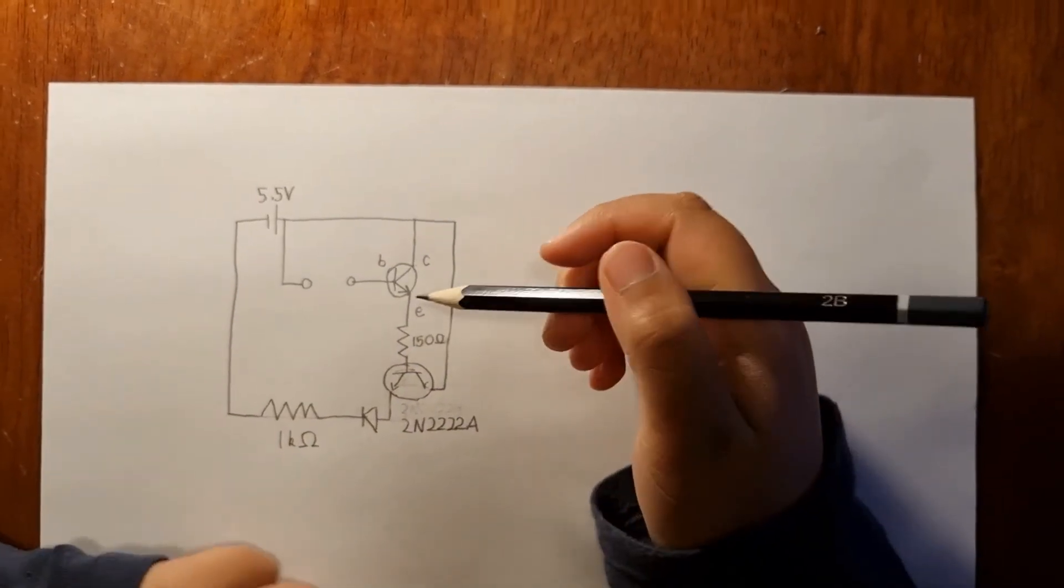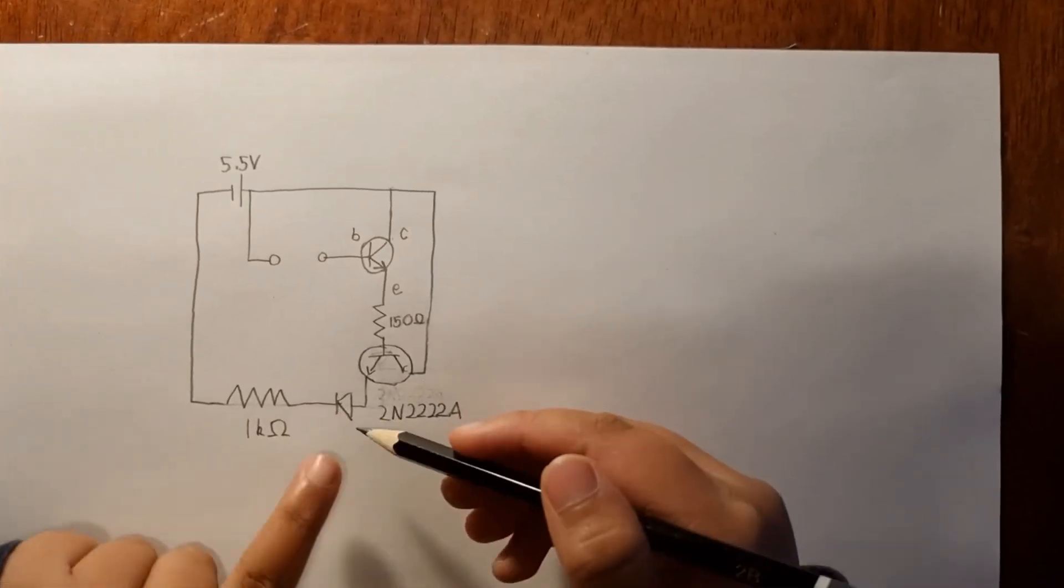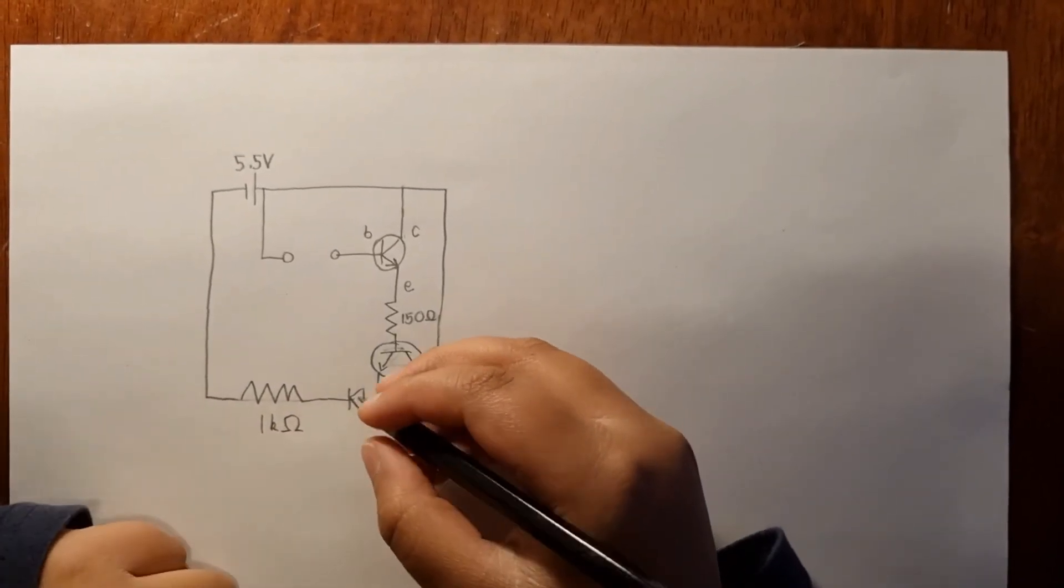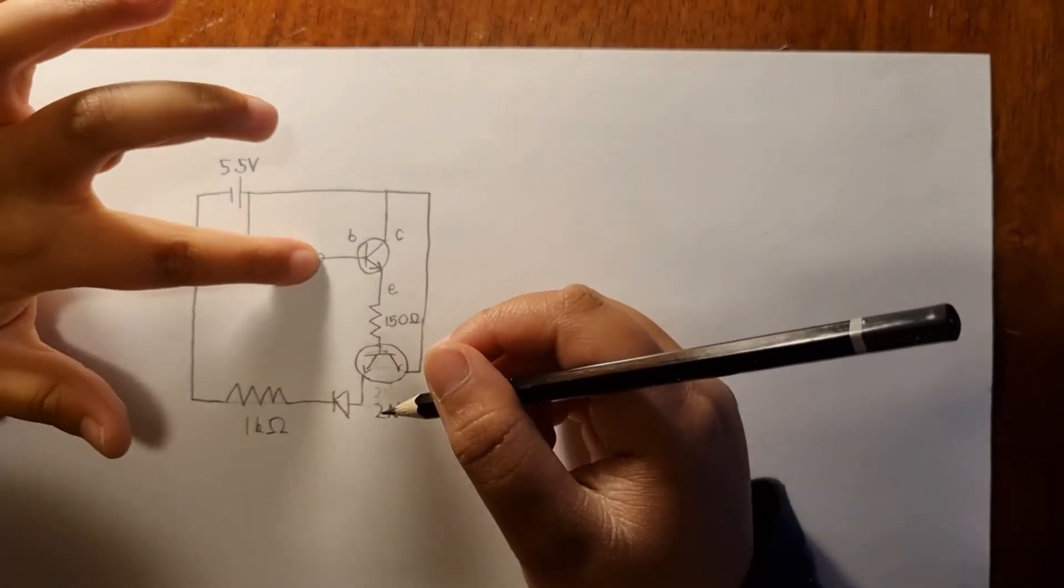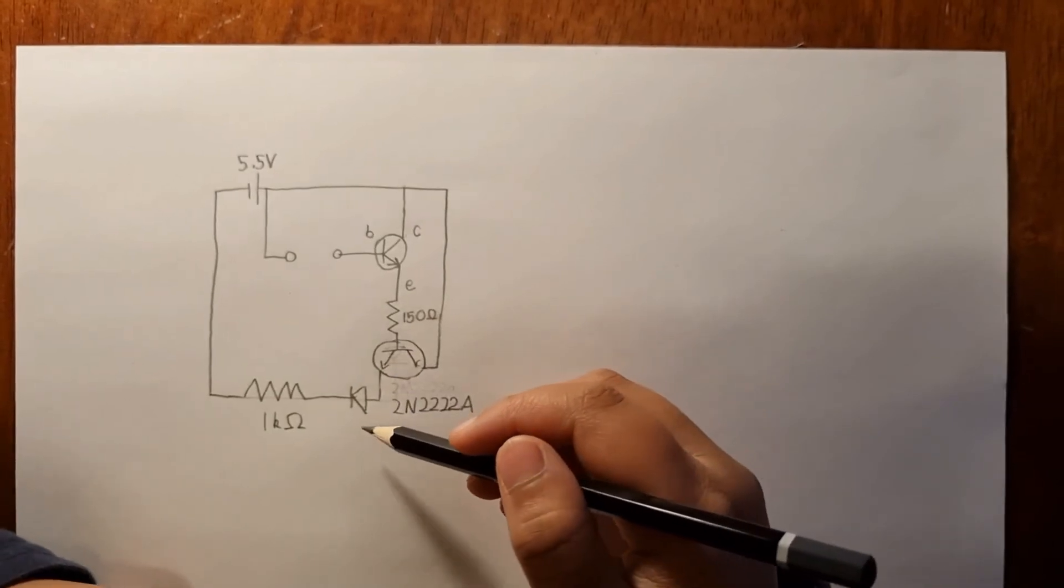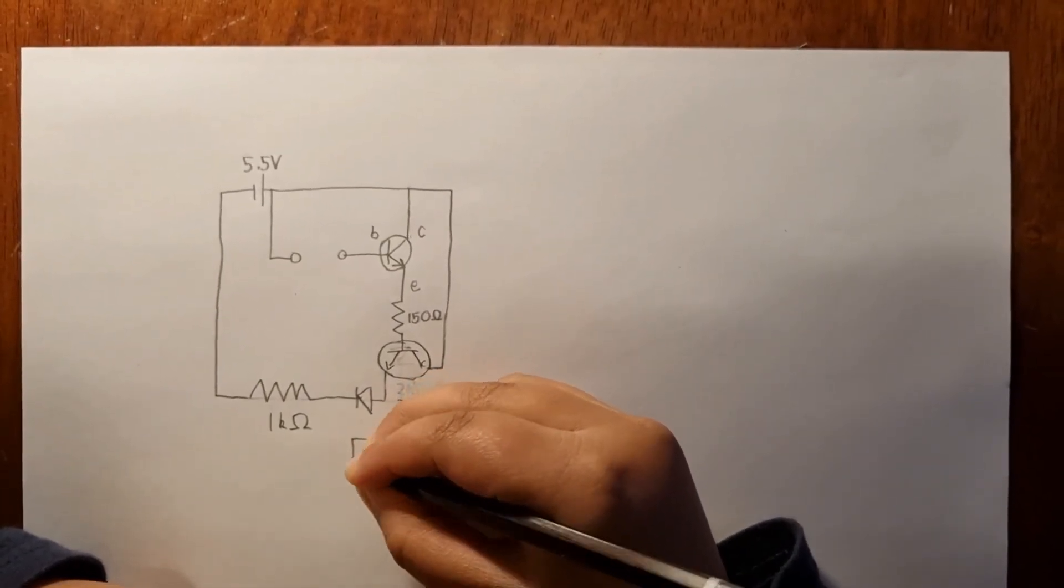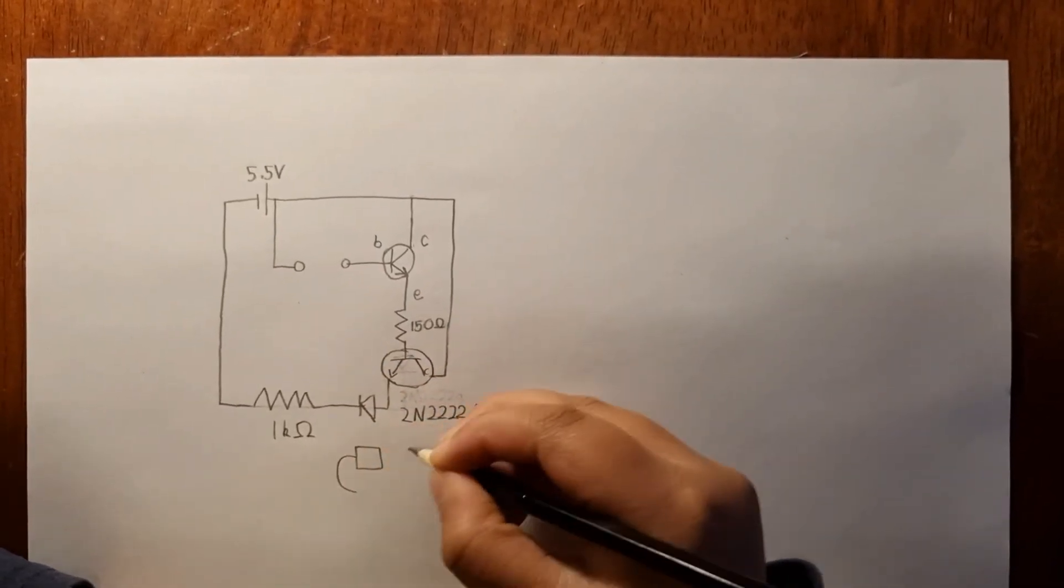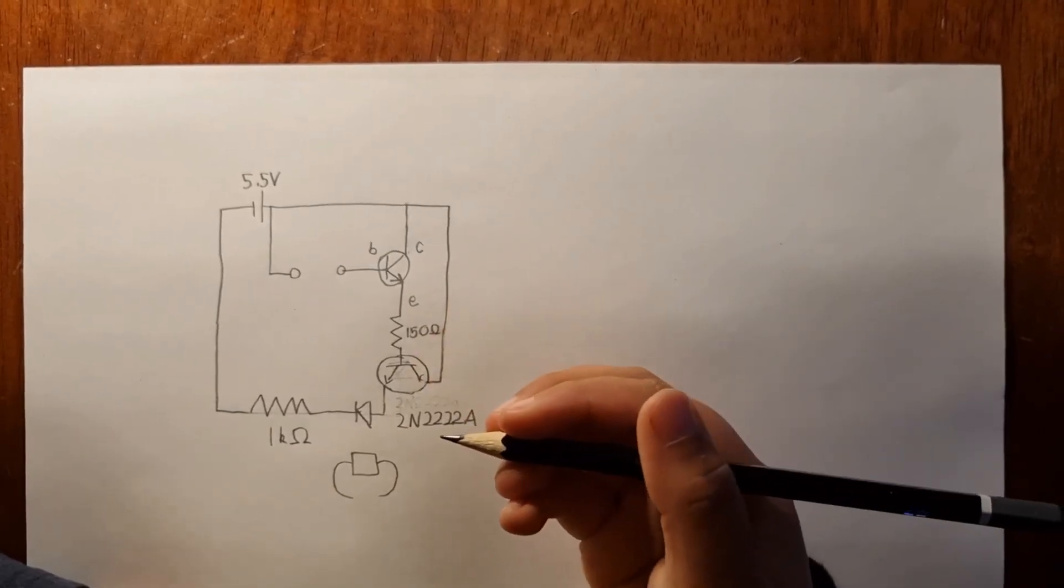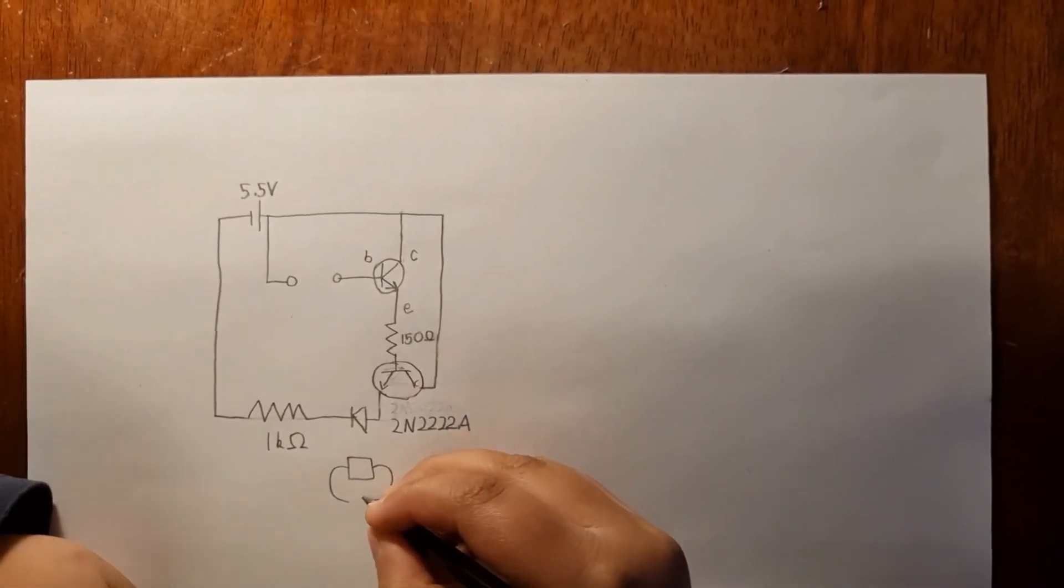And we don't even necessarily have to use an LED for this circuit. We can also use a buzzer, which will give a buzz when we put this in. We can also put an electromagnet, or we can also put a relay, which can give much higher voltage that a normal transistor can't do. And we can use that relay to connect to a house light bulb.